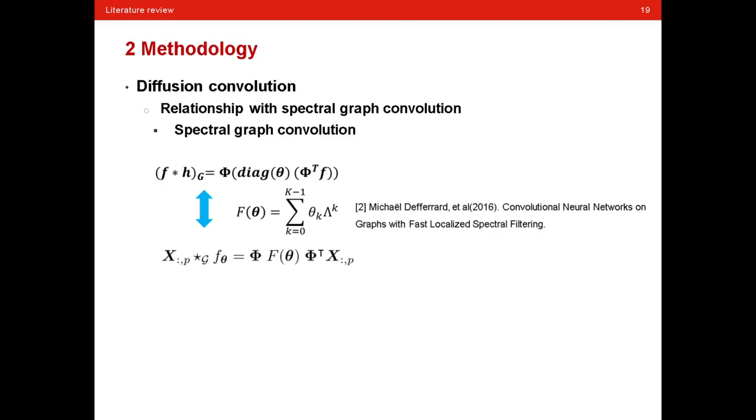And then in the following paper, the convolutional neural networks on graphs with fast localized spectral filtering, the train parameters is replaced by a polynomial function. And then we have a formula that appears on the paper we review today.